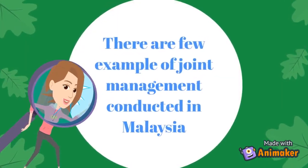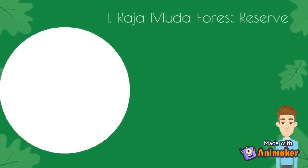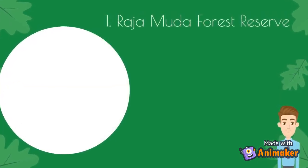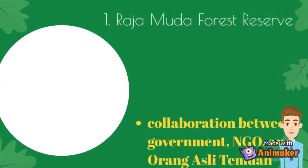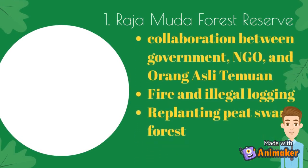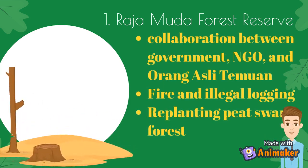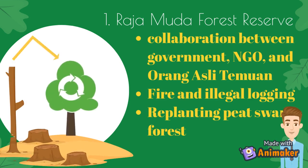There are a few examples of joint management conducted in Malaysia. The first example is in Rajamudha Forest Reserve. This program involves the government, private sector, and indigenous people. The program is implemented to conserve against environmental degradation due to fire and illegal logging, and the activity carried out is the recultivation of peat swamp forest.